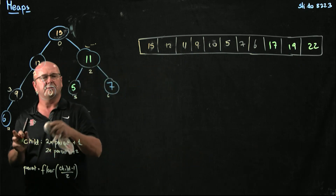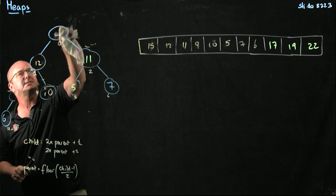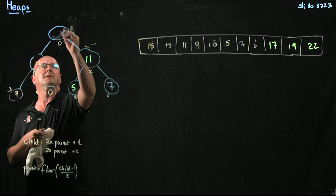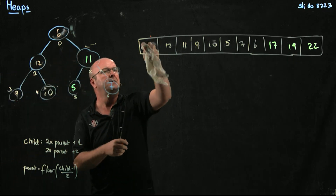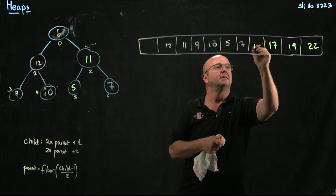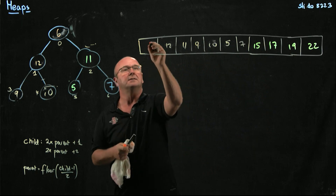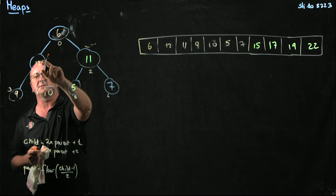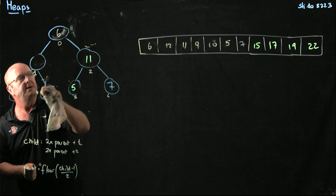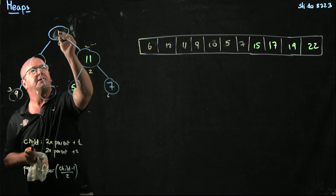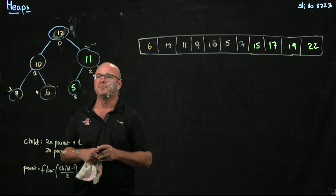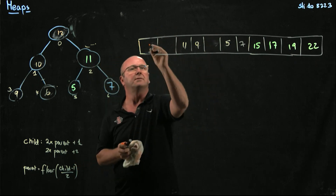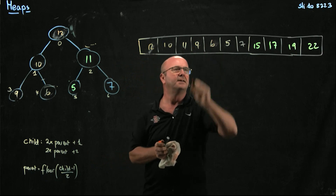And now we take away the 15. The way that we do that is we swap the 15 and the 6. Here's the 15 and the 6 being swapped — 6, 15, and the 6. Now we've got to balance the heap again. So we've got 6; we'll swap that with the 12 and we'll swap it with the 10. So we've got 12, 10, 6 — we've re-sorted our heap. We've got 12, 10, and 6.